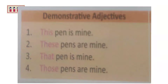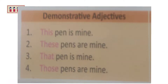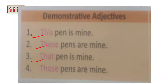Now let us see the difference between demonstrative adjectives and demonstrative pronouns. Read these sentences: 'This pen is mine. These pens are mine. That pen is mine. Those pens are mine.' Here, 'this', 'these', 'that', and 'those' are demonstrative words. Do you know why they are demonstrative adjectives here?